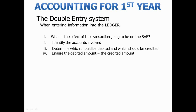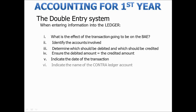We need to ensure that the debited amount is equal to the credited amount. And then, as always, we need to indicate the date of the transaction, the name of the contra ledger account, and also remember to indicate the folio number of the subsidiary journal.